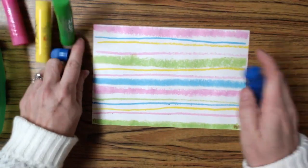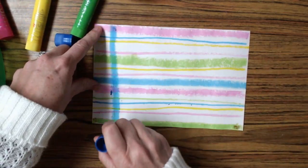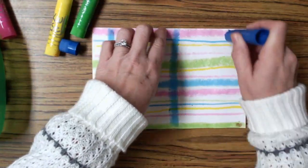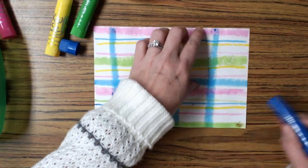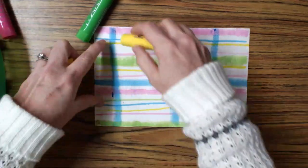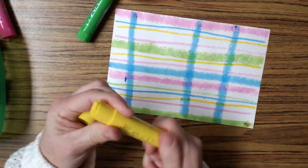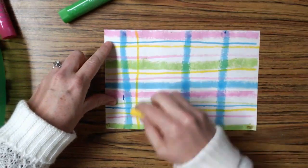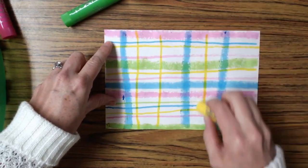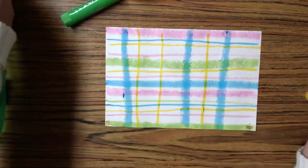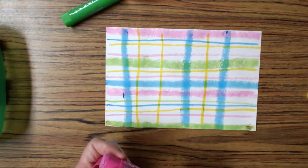Now I'm going to turn my paper horizontal, and I'm going to do the same thing, working from the left to the right, adding in either fat or skinny lines in each of the colors. It almost starts to create this crazy checkerboard pattern with lots of squares or rectangles on it.